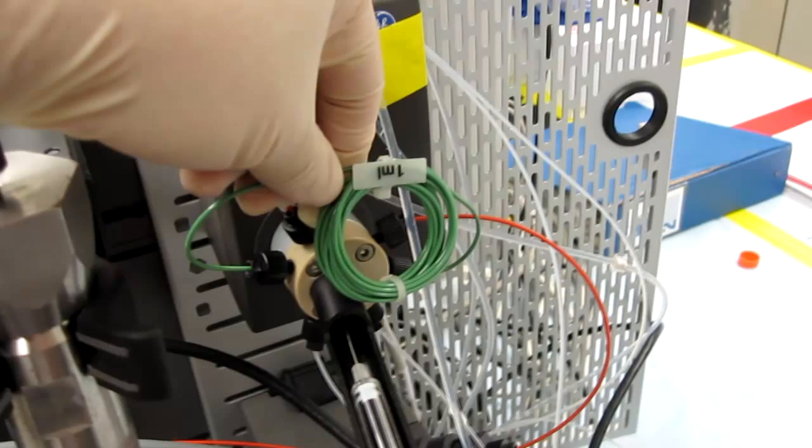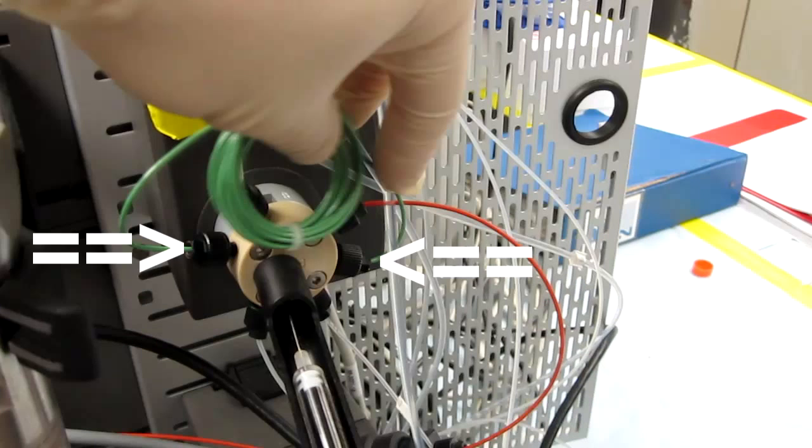The sample loop can also be switched out to the desired volume. In this case, the 1 mil sample loop is attached and can be changed out by unscrewing the plastic screws on either side.